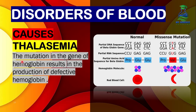What are the causes of thalassemia? A mutation in the hemoglobin gene results in the production of a defective hemoglobin molecule. As a result of this mutation, the red blood cell also loses its normal shape and its oxygen-carrying capacity, which results in thalassemia.